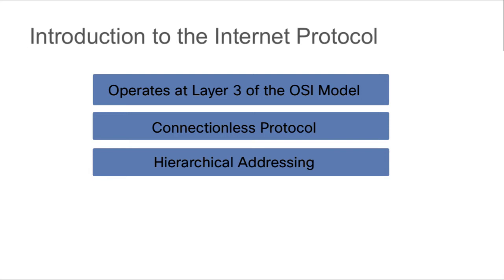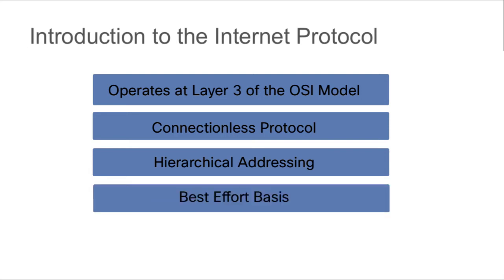The service that IP provides is best effort. It doesn't guarantee that the packet will be delivered — a packet could be dropped along the way, duplicated, or routed in the wrong direction. IP does not provide any reliable service. If we need reliability, we're going to leave that up to our upper layer protocol.